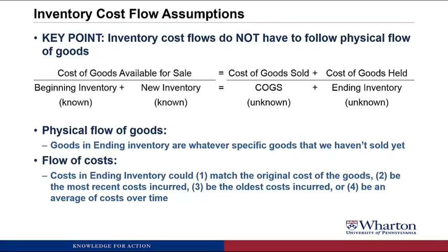This number three — using the oldest possible banana cost in ending inventory — is the one people have trouble with. How could we use the oldest possible banana cost in ending inventory when we probably have the newest bananas? Well, the reason is that the physical flow of goods does not have to match the flow of costs. So make sure you keep that assumption straight.